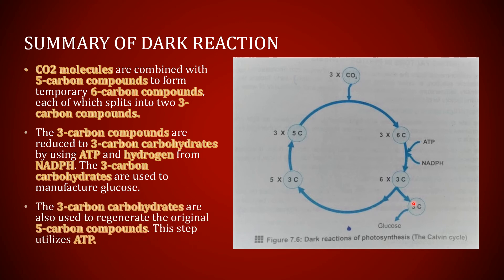This is the third function. Glucose contains six carbon, so the dark reaction occurs two times to make one atom of glucose. After one three-carbon atom separates for making glucose, the remaining five three-carbon atoms again become three atoms of five carbon, completing the cycle. So this is the dark reaction.